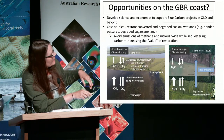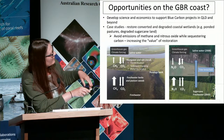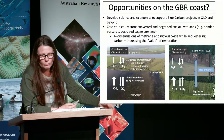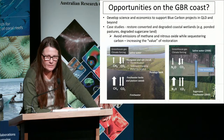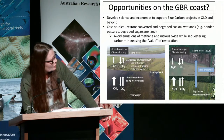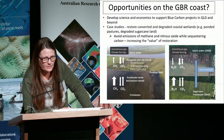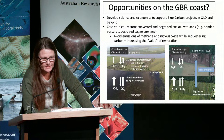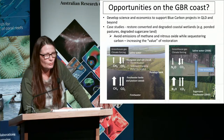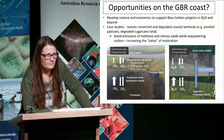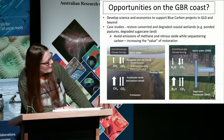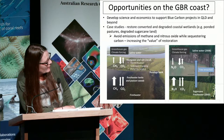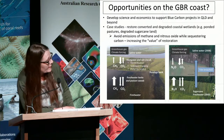With ponded pastures, a pondage bank is built to hold back the tide, and the land is flooded from the landward side with freshwater to keep the landscape wet for cattle production into the dry season. This is a particularly important land use in the Mackay-Whitsunday region and the Burdekin. The freshwater land supports pasture weeds.